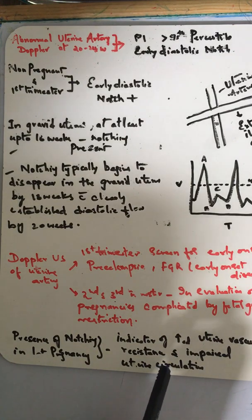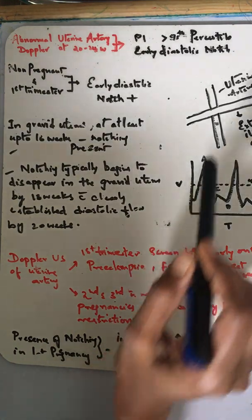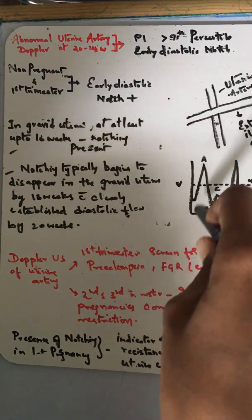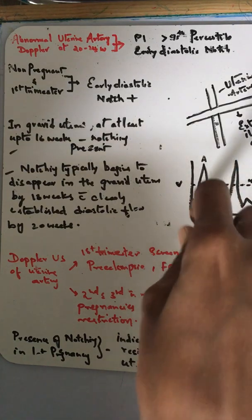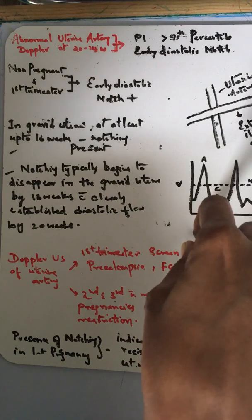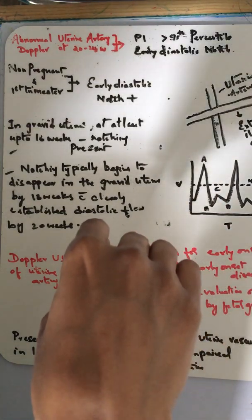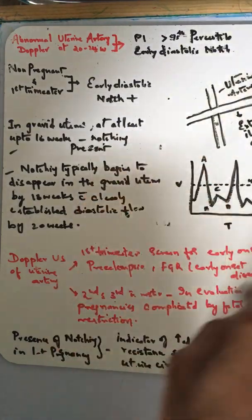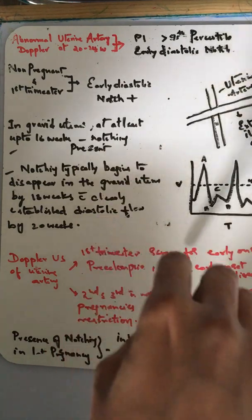How do you do an uterine artery Doppler during the first trimester? When the patient comes in the first trimester, obtain a sagittal section of the uterus and cervical canal, then zoom the area of interest and identify the internal cervical os.